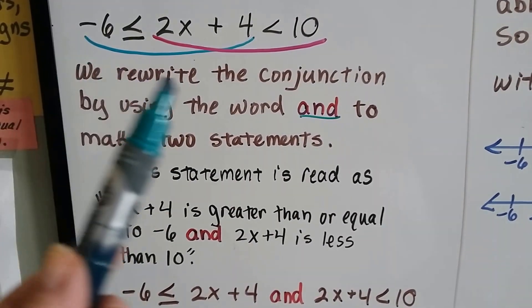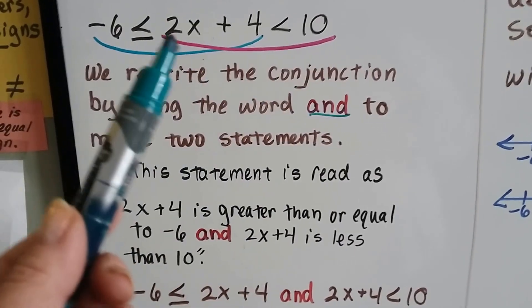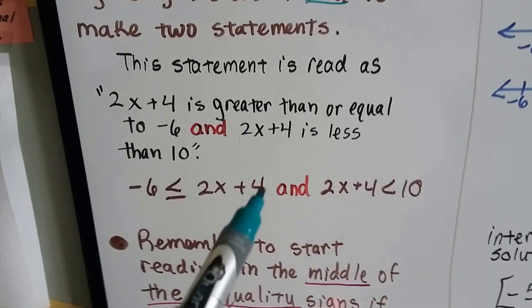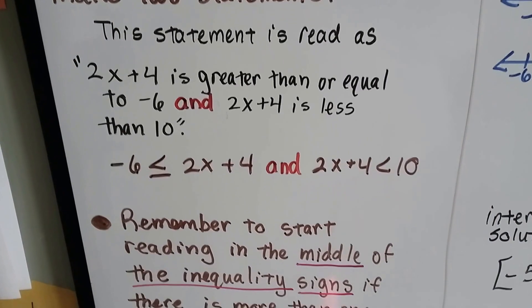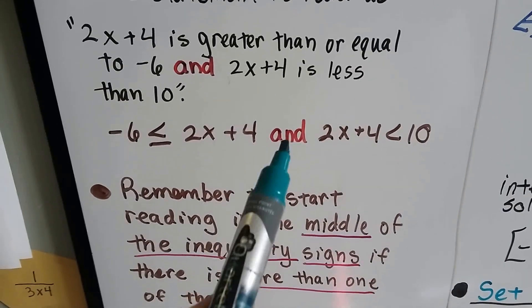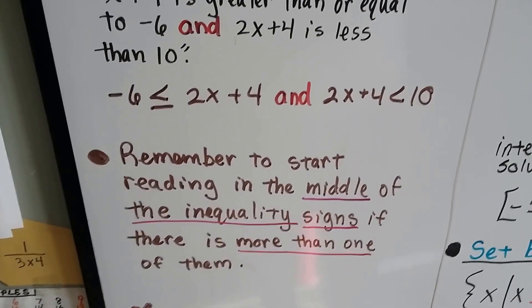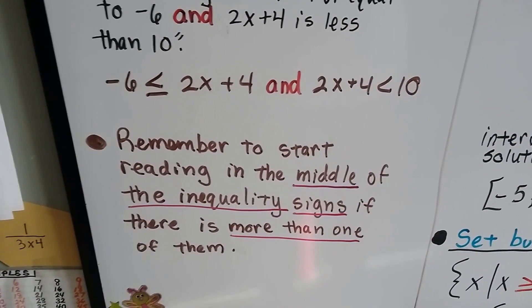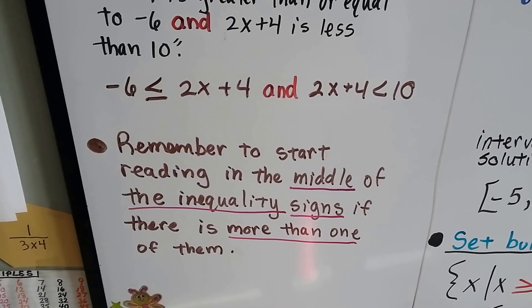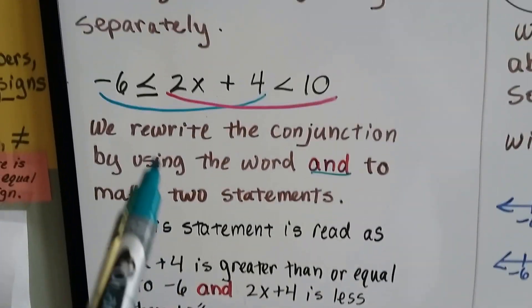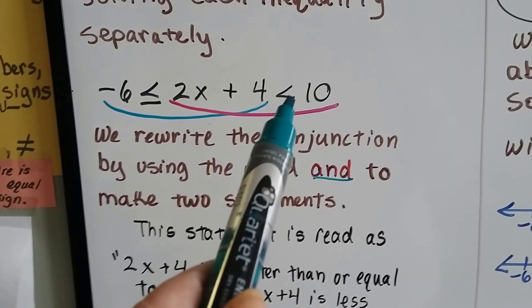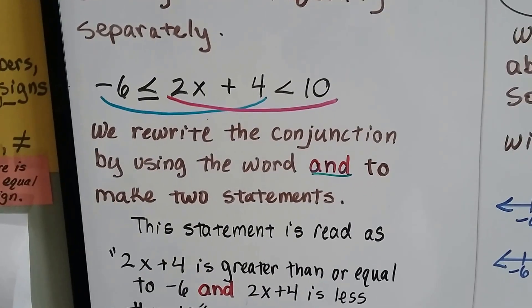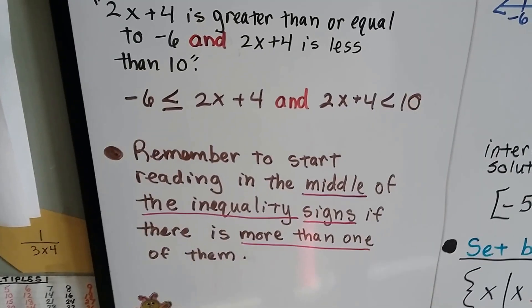So we've got this blue side and then we've got this pink side. So now we've got 2 with the word AND in front of it. Just remember to start reading the middle of the inequality signs if there's more than one of them. So because there was an inequality here and an inequality sign here, we start reading in the center.